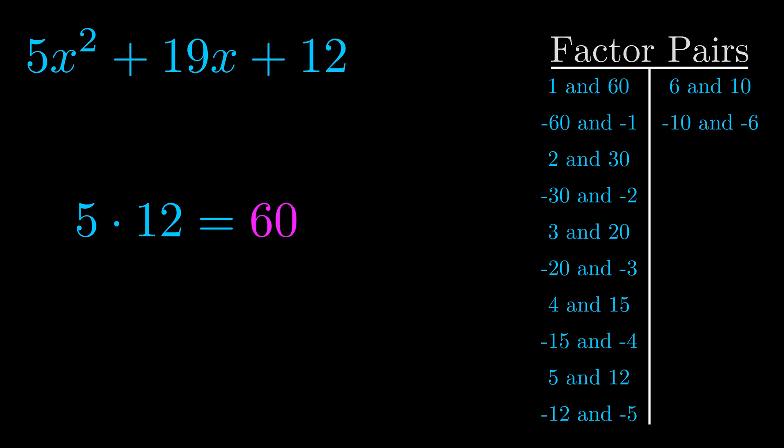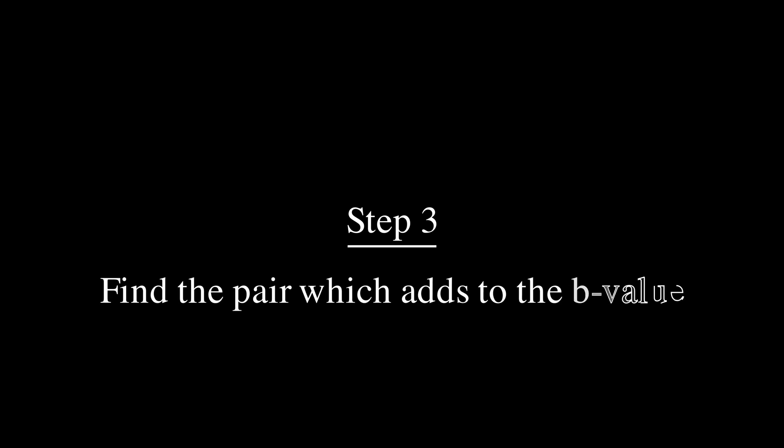Now once you have these factor pairs the goal is to find which of these pairs adds to the b value. The b value is the coefficient on the x term.